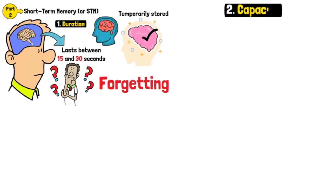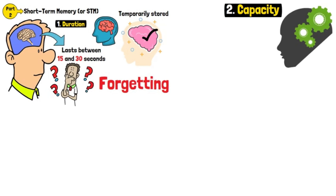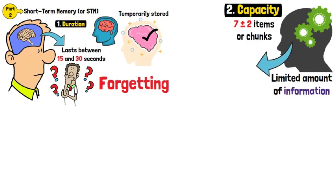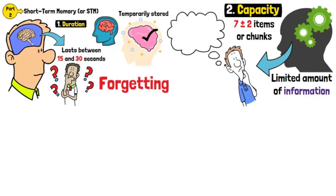Capacity: Short-Term Memory can hold a limited amount of information, often cited as 7 plus or minus 2 items or chunks. This means that we can usually remember between 5 and 9 pieces of information at once.